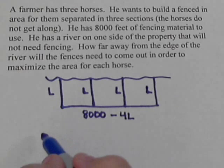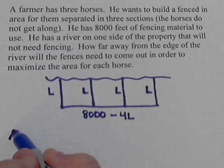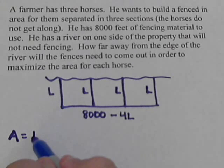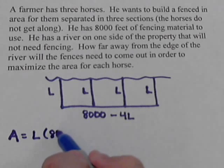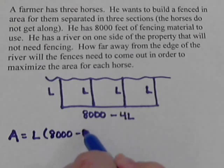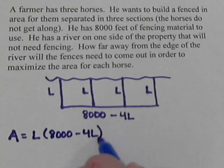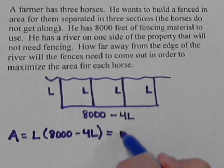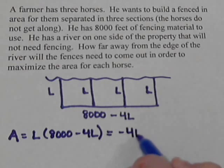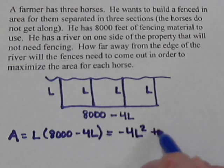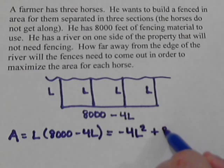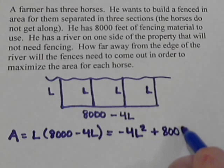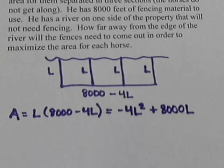So now we have our area formula. Area is length times width. So L times 8,000 minus 4L. And if we multiply that out, L times negative 4L. So that's negative 4L squared plus L times 8,000, 8,000L. And so let's rewrite that down below.